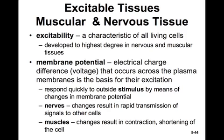Excitable cells respond quickly to outside stimuli by means of changes in this membrane potential. In nerves, these changes result in rapid transmission of signals to other cells. And in muscles, the changes result in contraction or shortening of the cell.